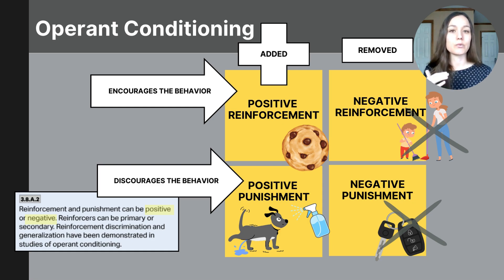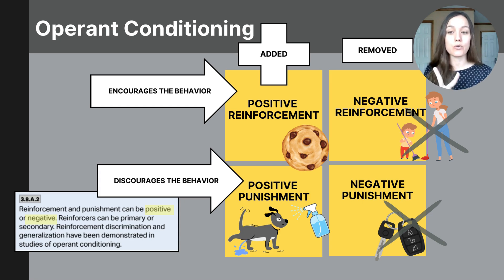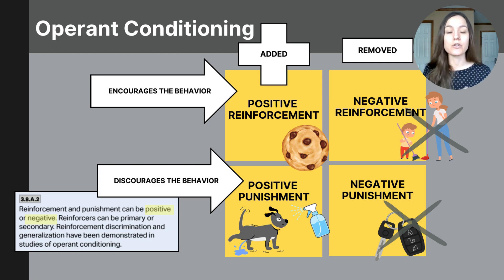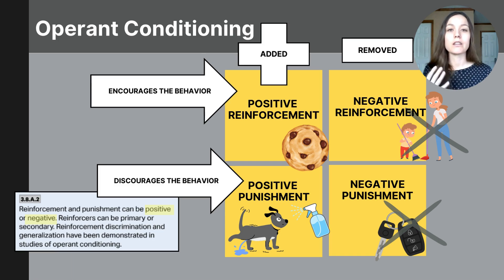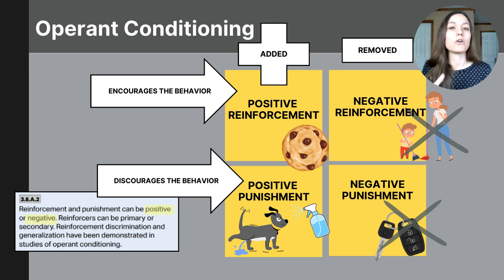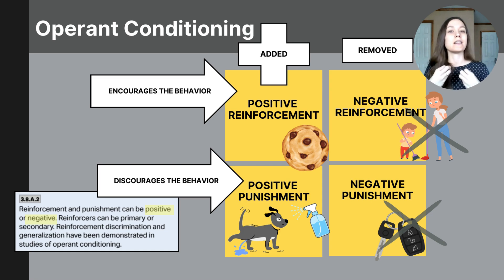My biggest tip for students: when approaching a question asking you to identify what type of consequence is being used, ask yourself two questions. First, will the behavior continue? If yes, it's a reinforcement; if no, it's a punishment. Then ask yourself why — is it because something was given? If so, it's positive. If it's because something was taken, then it's negative.